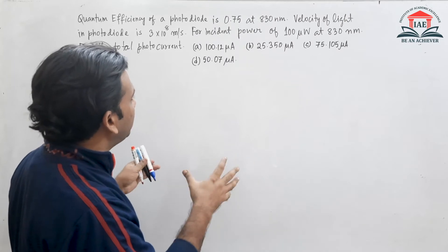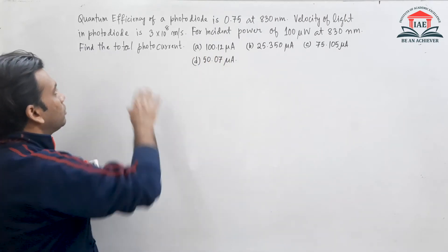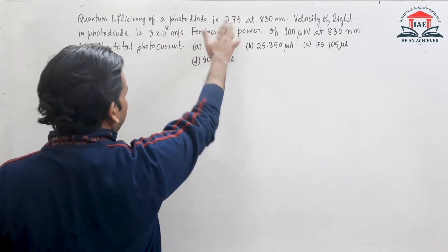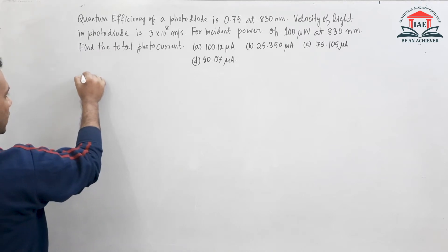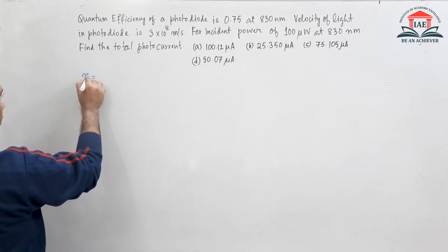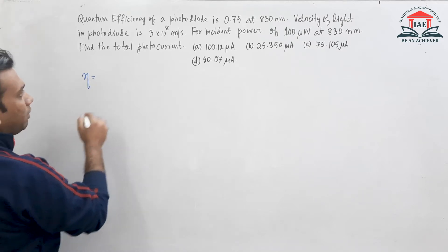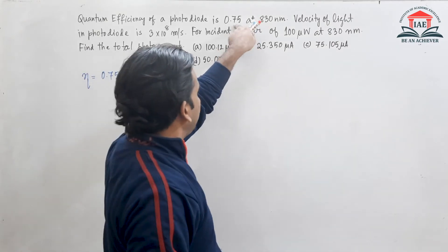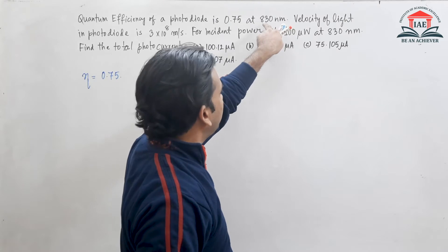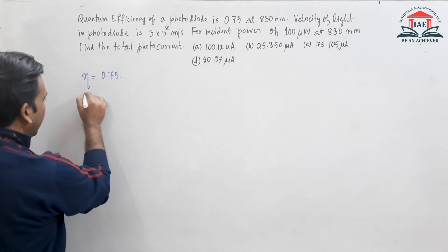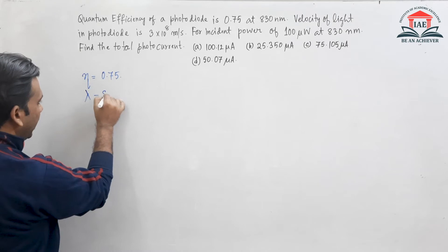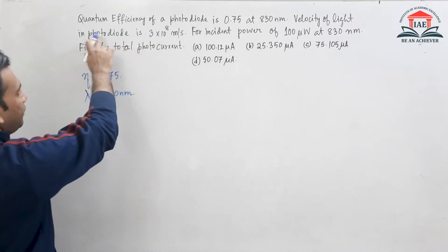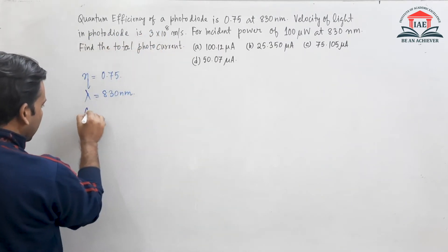Let us jot down all the information given in the numerical. The first piece of information is that the quantum efficiency of the photodiode, denoted by eta (η), is 0.75 at 830 nanometer wavelength, so lambda is 830 nm.